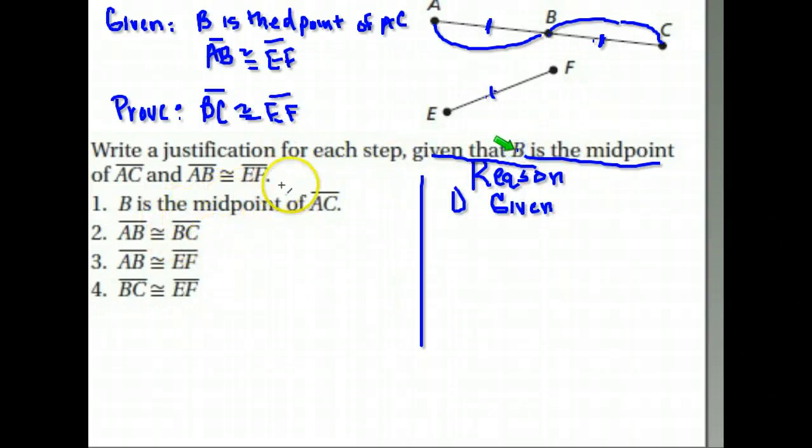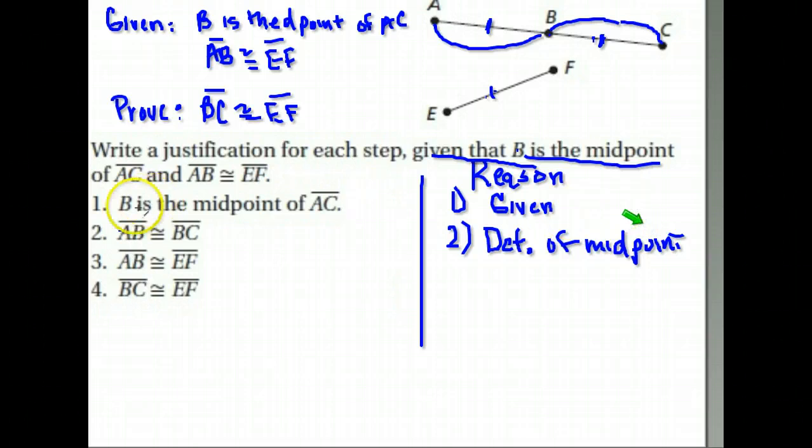When we get to step two, how do we know that AB is congruent to BC? We know that because B is the midpoint, and if it's a midpoint, it means it cuts this into two equal pieces. What I'm going to say here is this is the definition of midpoint. That's what midpoint means: it cuts it into two equal pieces, making AB and BC the same size.